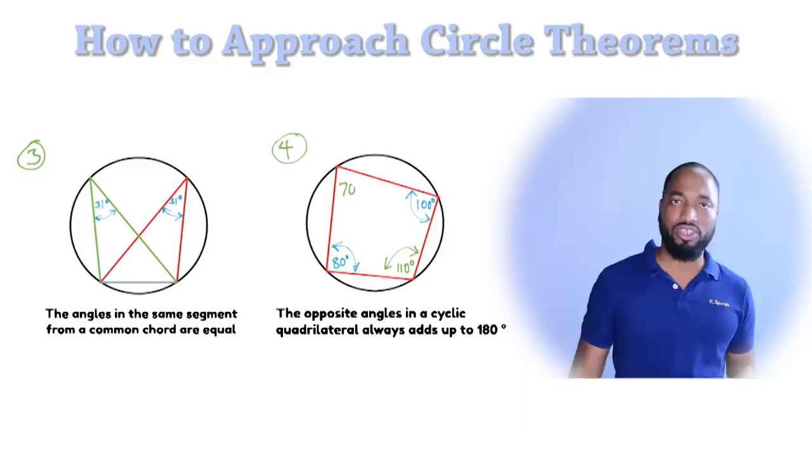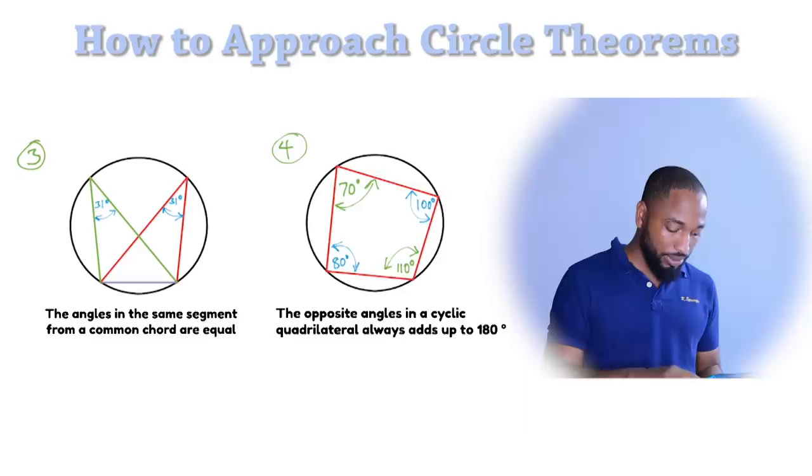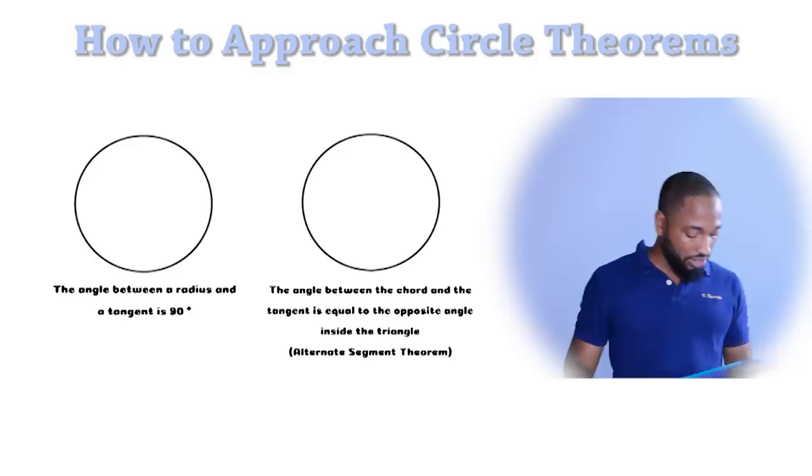Number four is about cyclic quadrilaterals. Cyclic quadrilaterals are quadrilaterals that are trapped inside a circle. So you need to know this for CXC as well. But here's what you need to know. You need to know that this angle and this angle which are opposite will always add up to 180 degrees. The opposite angles in a cyclic quadrilateral always add up to 180 degrees. Can you see the same thing happening in the green? Alright.